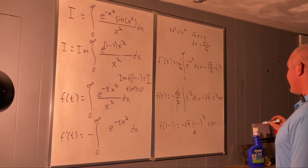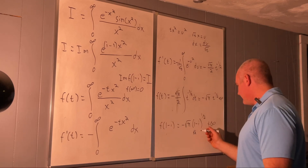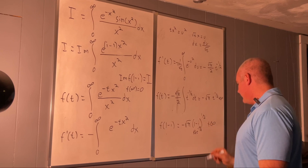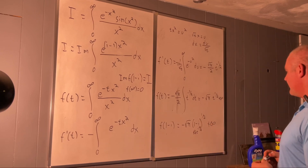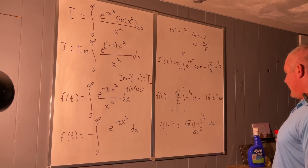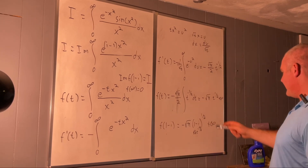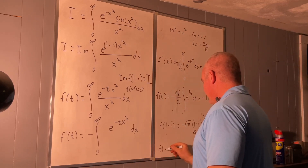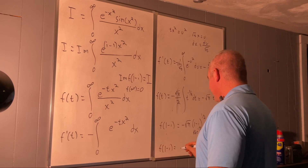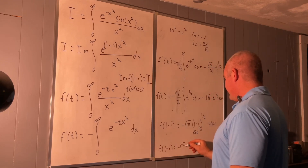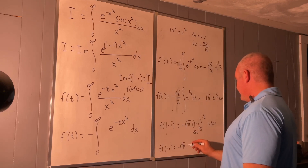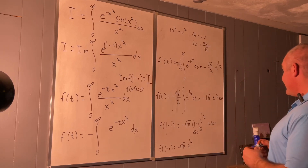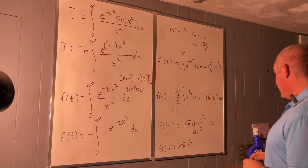We're taking that to the one half power, so F evaluated at (1 minus i) gives us negative square root of pi times two to the one fourth power times e to the negative i pi over eight, plus infinity.